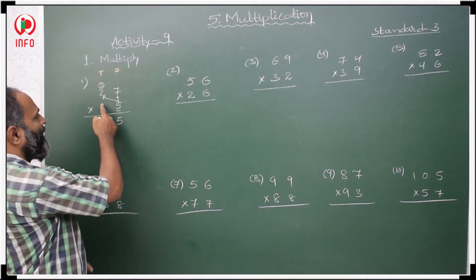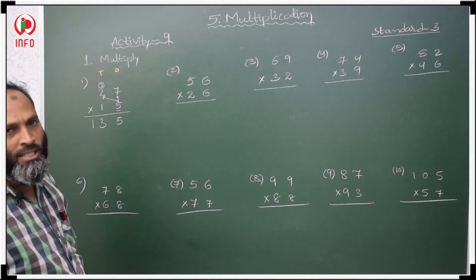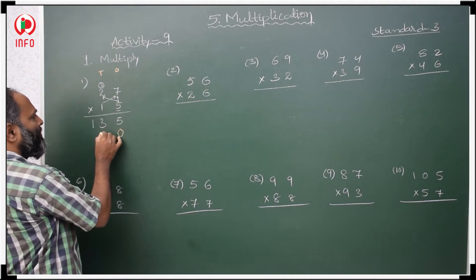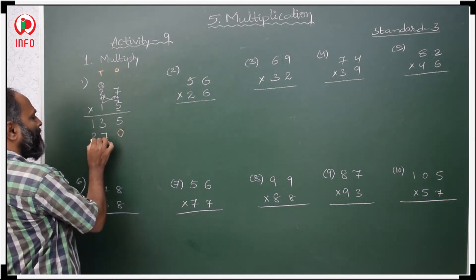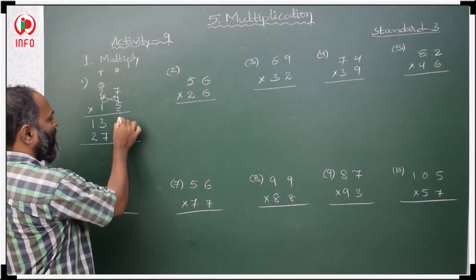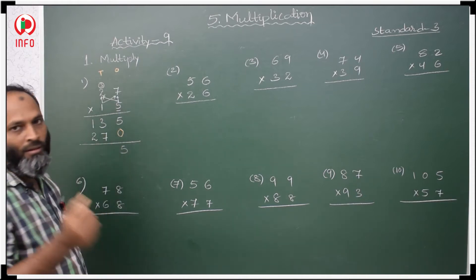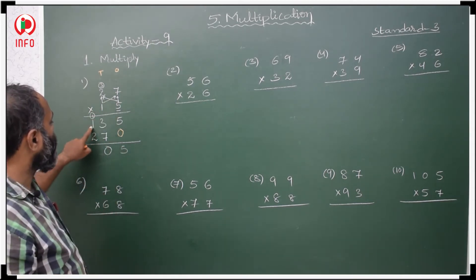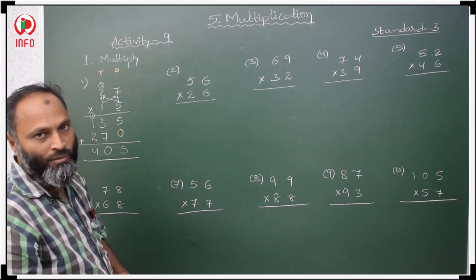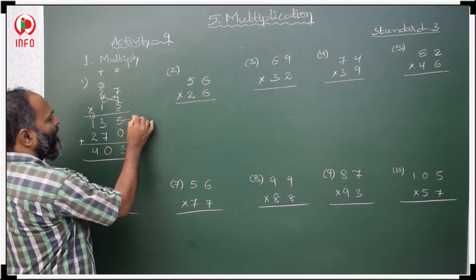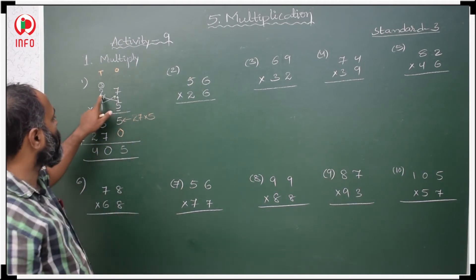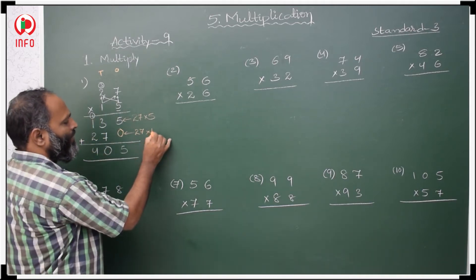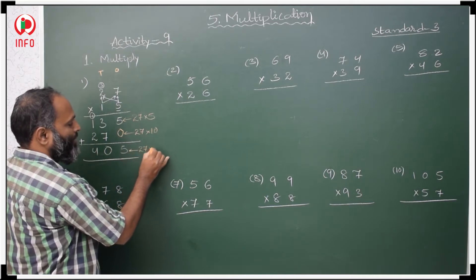Then after that, we have to multiply with 1. So 1 is in tens place, that is why we first write 0, then 1 sevens are 7, 1 twos are 2. Now we have to add: 5 plus 0 is 5, 7 plus 3 is 10, carry 1; 2 plus 1 is 3, 3 plus 1 is 4. Answer is 405. This is the product of 27 with 15.